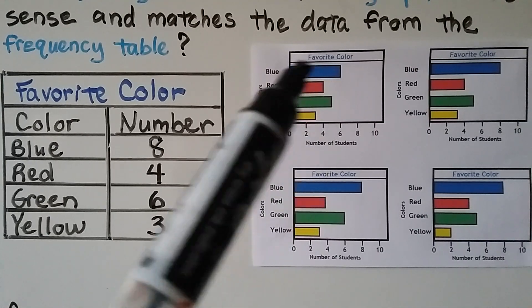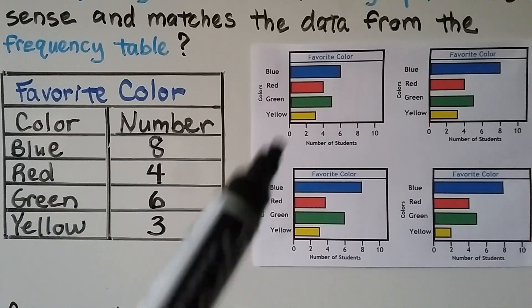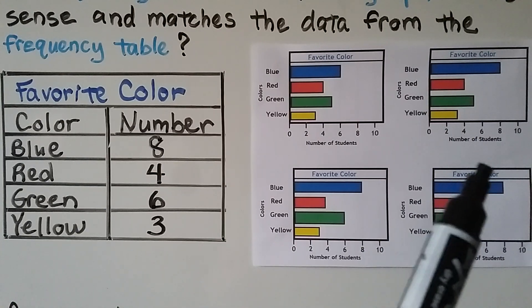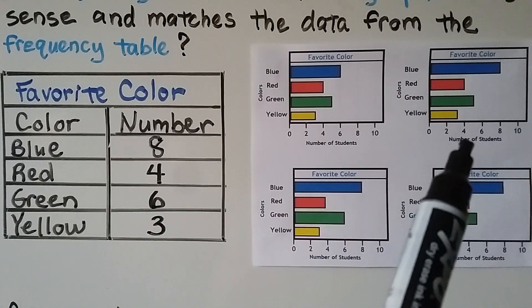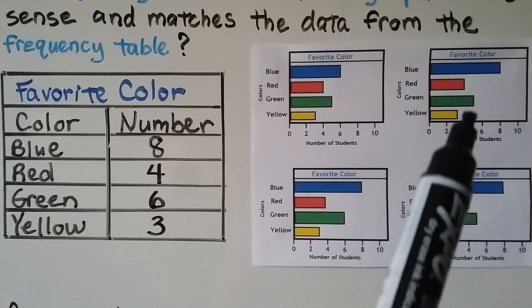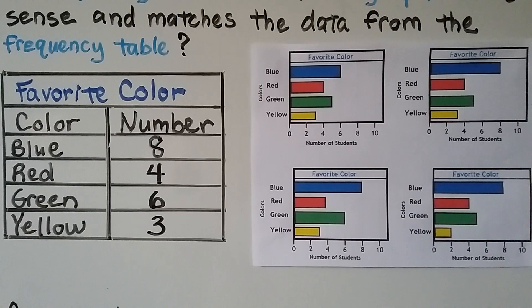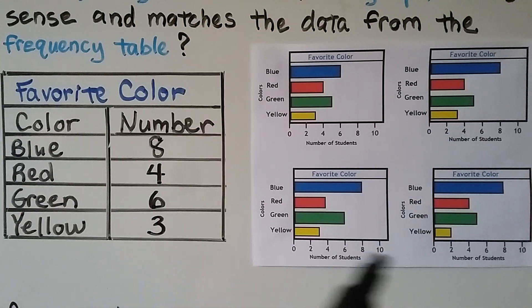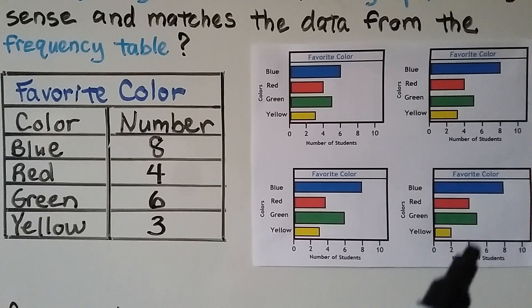Blue should be eight. The first graph shows blue as six, so it's not that one — all the numbers have to match. The second graph has blue as eight — yes. Red needs to be four — yes. Green needs to be six, but it's in between four and six, meaning it must be five, so that's not right. The third graph has blue as eight and red as four, but green is five again and yellow should be three but shows only two, so that one's not right either.